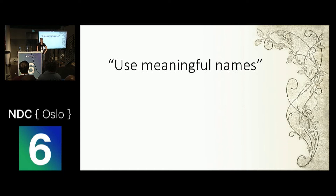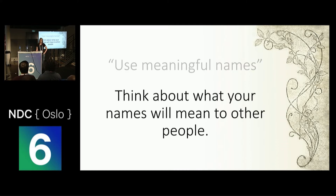I've only known about one or two developers in my entire career who actually named their variables A, B, C, and D. For the most part, names do have meaning, and for the most part people use meaningful names. But just because a name means something — and just because a name means something to you — doesn't necessarily mean that it means the same thing to everyone. The goal should be that your variable names or your class names have the same meaning to everybody who reads them.